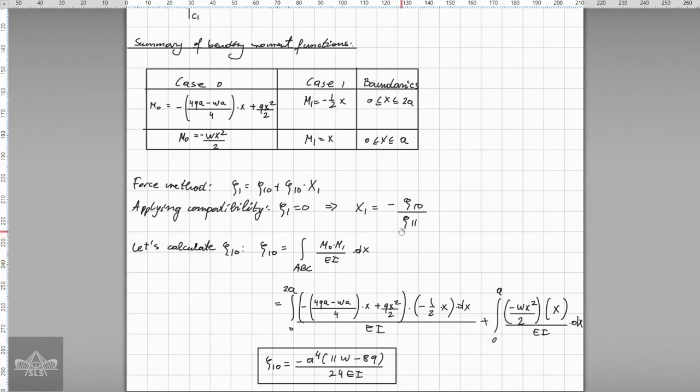So let's calculate the first unknown by integrating all over the frame which is going to be from point A, B, C. Then we are just going to find this integral which is going to look something like this as shown here.